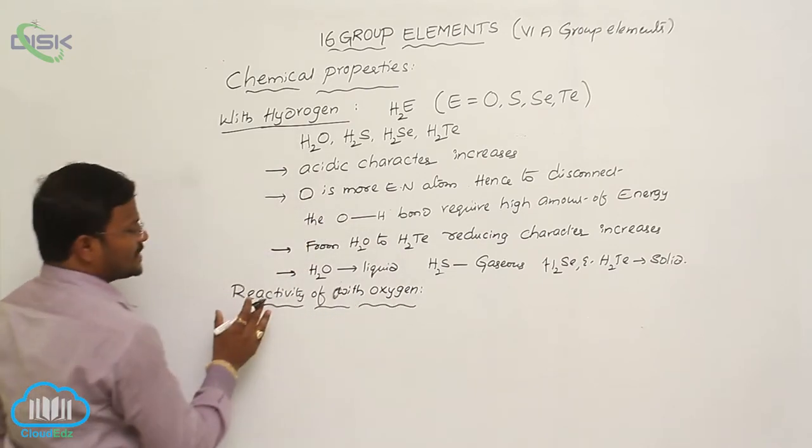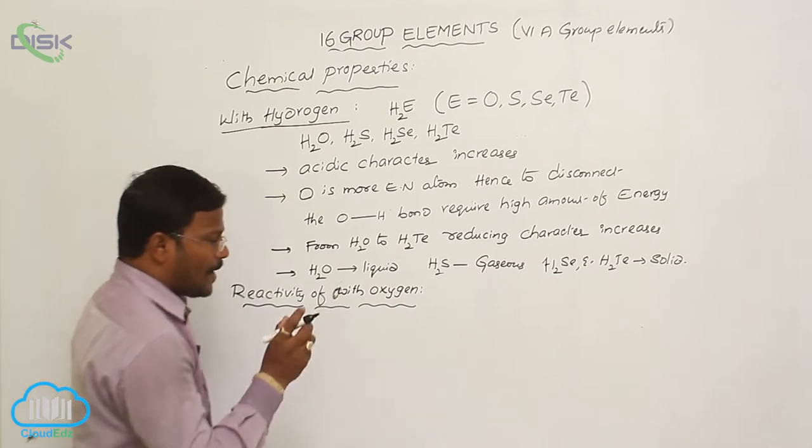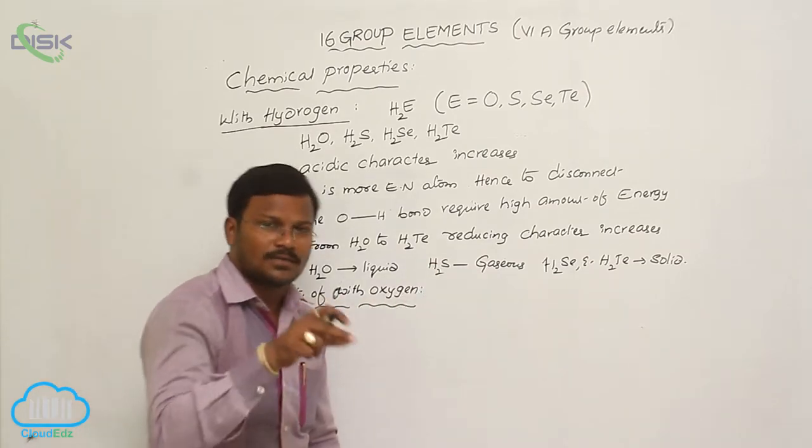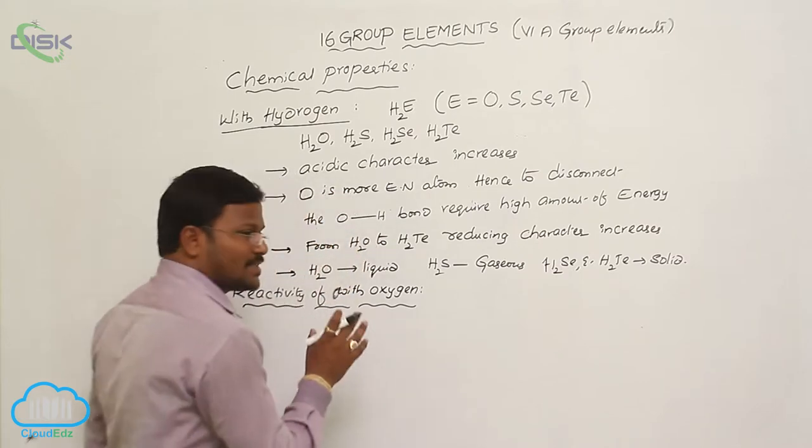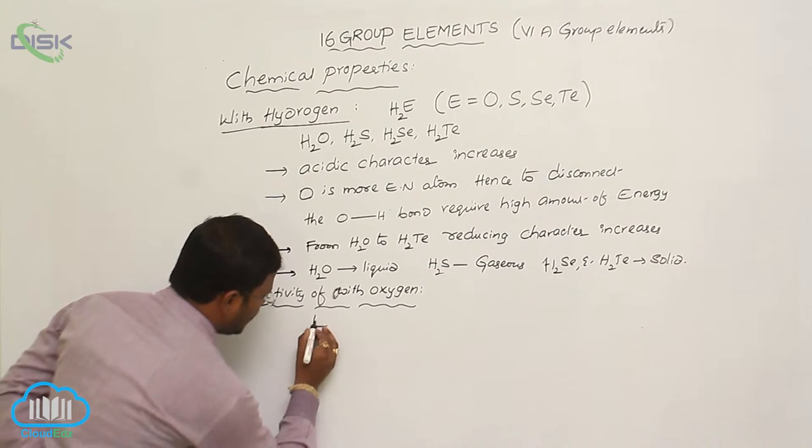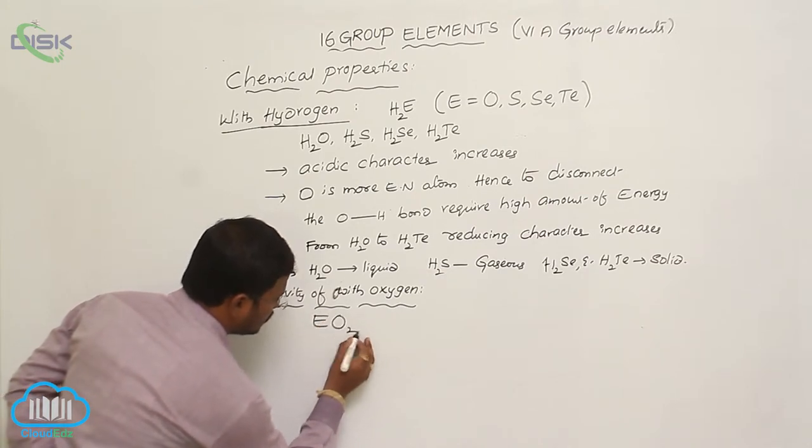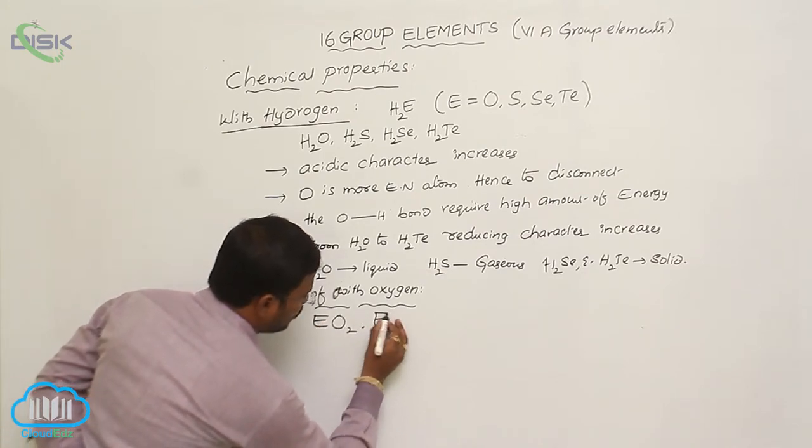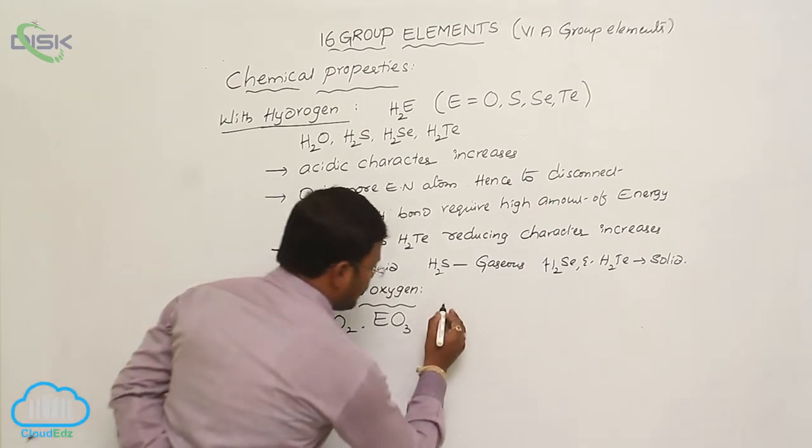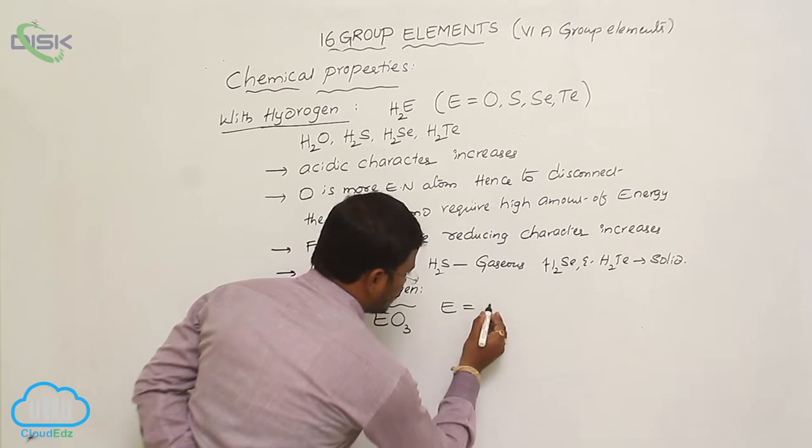The 16th group elements by reacting with oxygen—of course, oxygen also belongs to 16th group—these 16th group elements by reacting with oxygen they produce EO2, EO3 type of chemical substances where E is equals to sulfur.